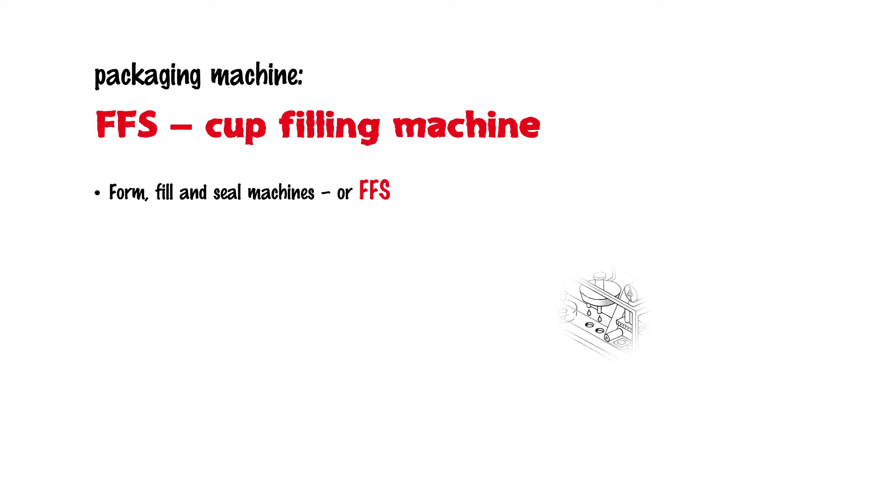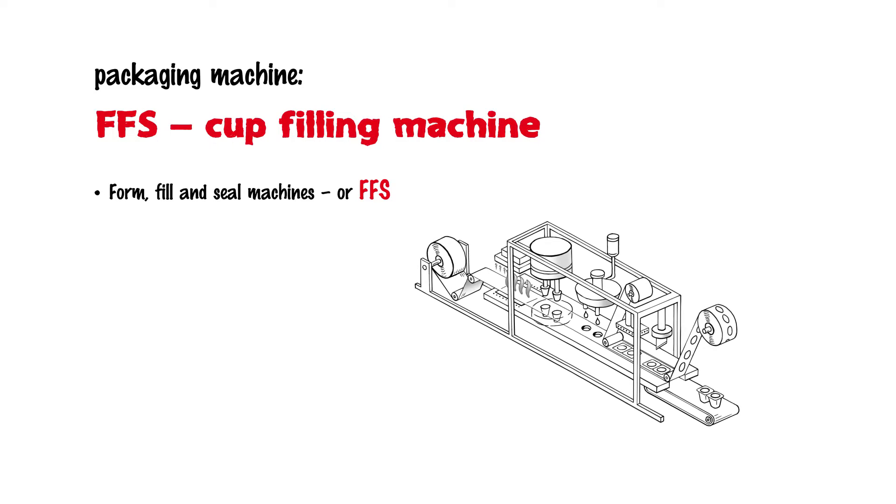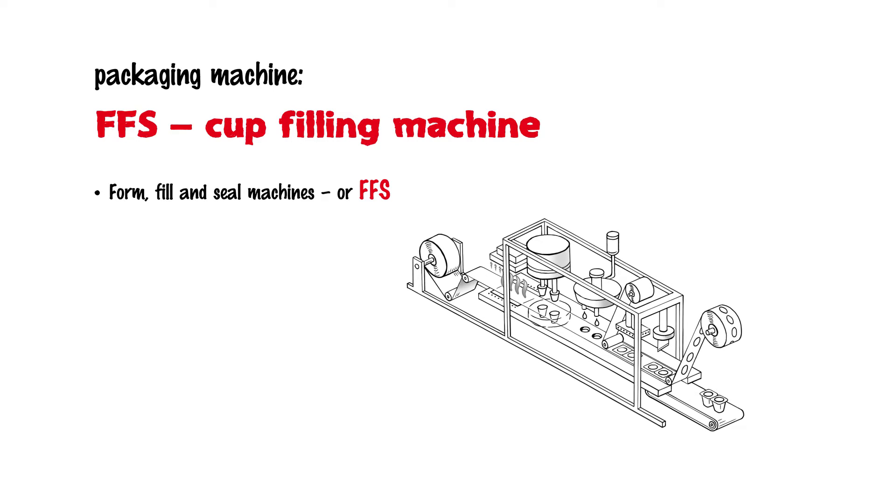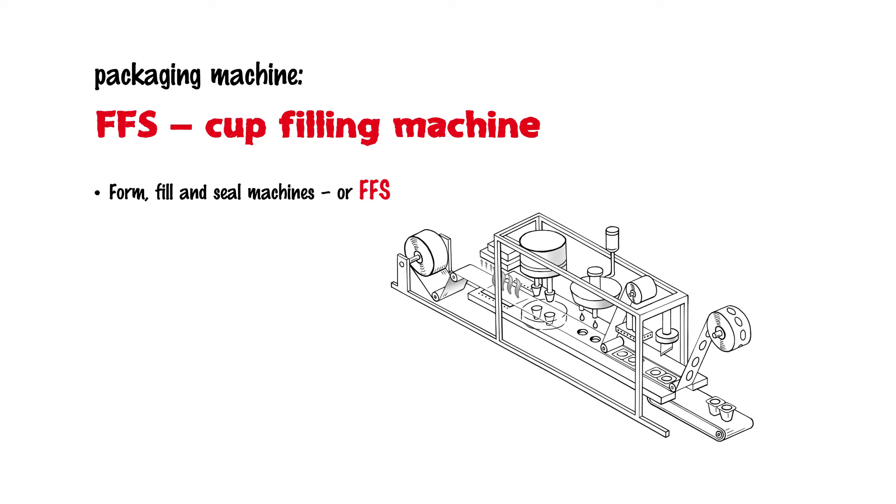In order to better understand the operating principle and structure of a form, fill, and seal machine, we will examine five essential process steps and applications in more detail, using the example of a cup filling machine.